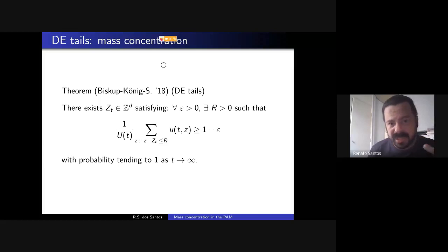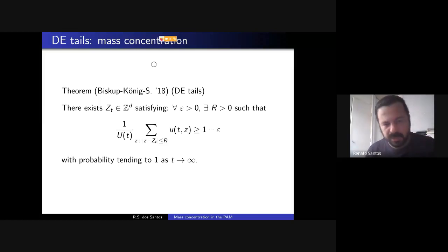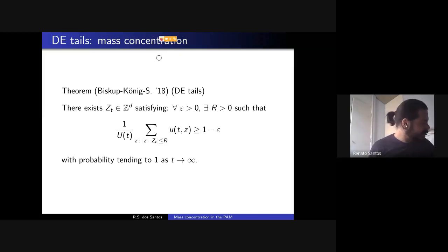The double exponential case remained open because the island structure is non-trivial — the islands do not reduce to single points. This is what Wolfgang König proposed to me when I started my postdoc, and what we proved together with Marek Biskup. In the double exponential case, we pick a single center Z(t) from the set Γ_t, and show: for any tolerance ε, there exists a radius R such that the sum of u(t,x) over |x − Z(t)| ≤ R, divided by U(t), tends to one in probability as t → ∞.